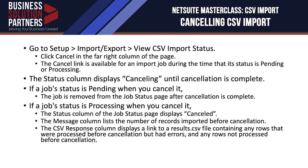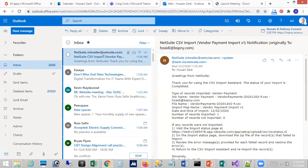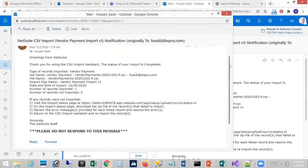When cancelling a CSV import: if it's pending, it cancels cleanly. If it's already processing, it can only cancel records not yet imported, and the notification will tell you which records were imported and which were not. An email notification is generated upon import completion regardless of whether the import was triggered manually or via SuiteScript, showing what ran, how many records were imported, and any failures or cancellations.